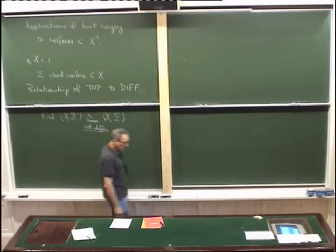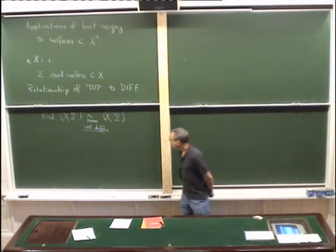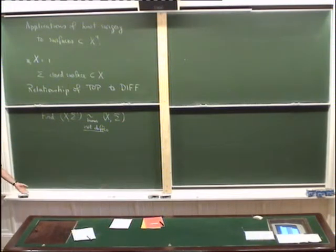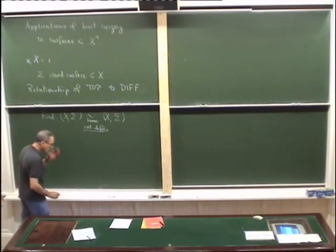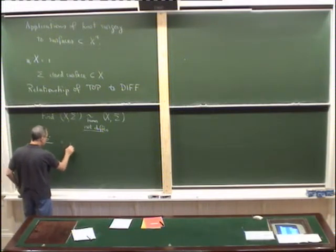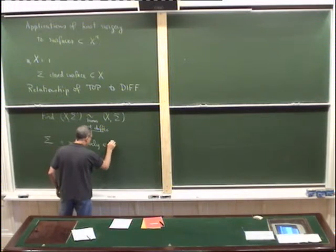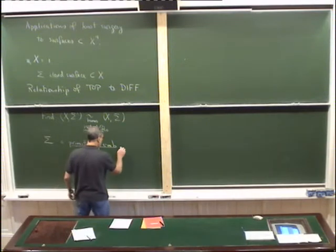I'd like to show you a simple technique that will produce surfaces like this, but is hard to detect without some kind of interesting four-manifold invariant — Seiberg-Witten invariants, for example. Let's suppose we have a surface that is primitively embedded, so pi one of its complement is zero.